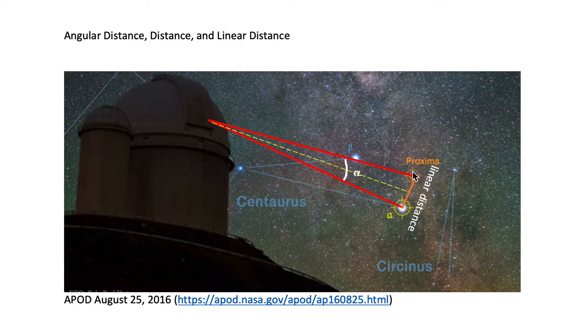One is Proxima Centauri, which is a linear distance indicated by this orange line, away from this yellow labeled Alpha Centauri star. So the star is Alpha Centauri and the other star is Proxima Centauri.